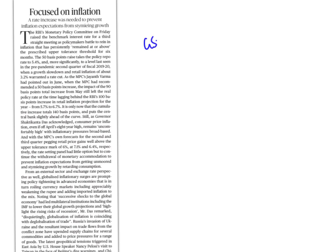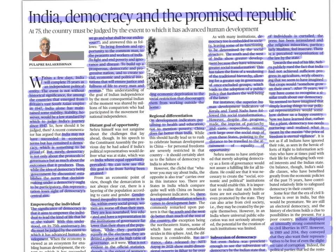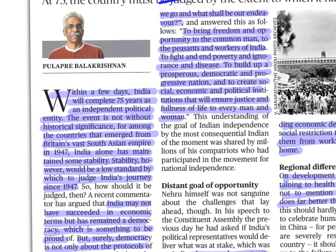This article falls under General Studies Paper 3, Indian Economy and Economic Development. The third article is an editorial from page number 6 — General Studies Paper 2. The topic is 'India, Democracy and the Promised Republic.' Within a few days we are going to celebrate our 75th Independence Day, and the article asks where we stand compared to what was envisaged in 1947.